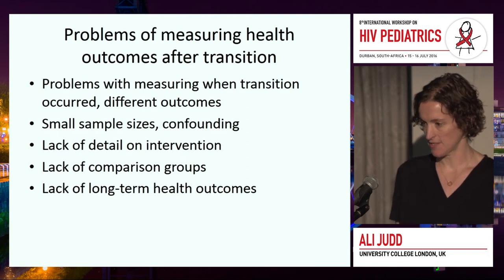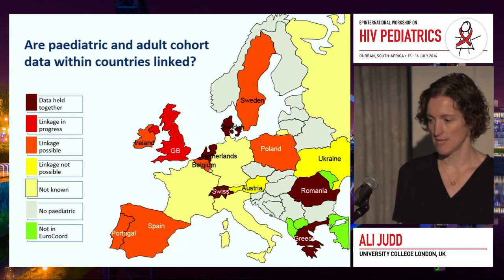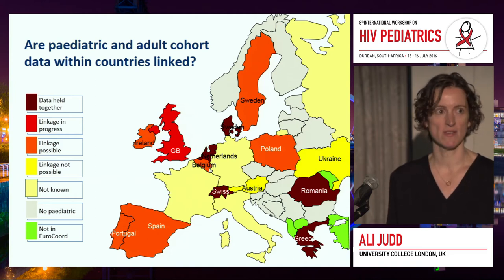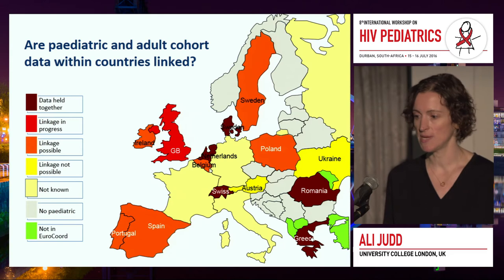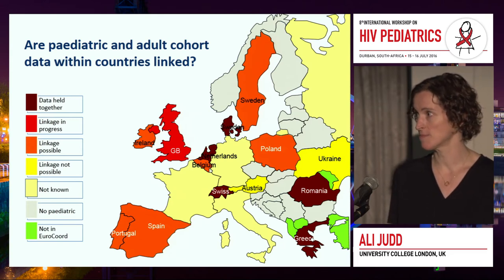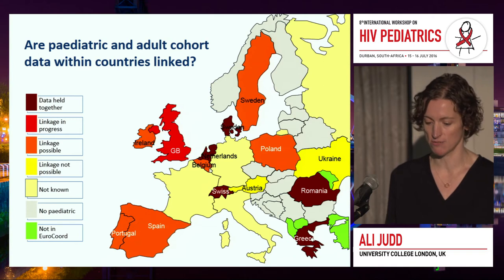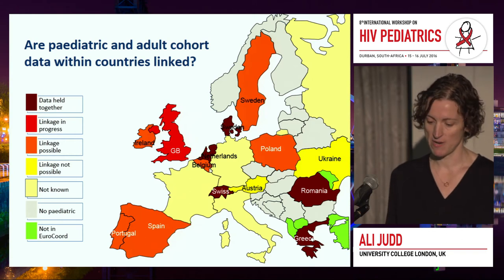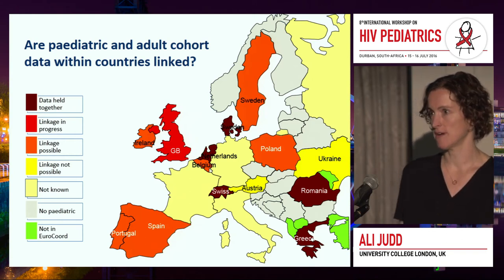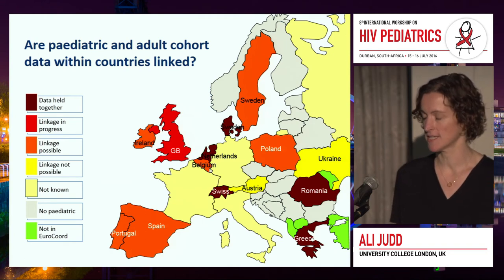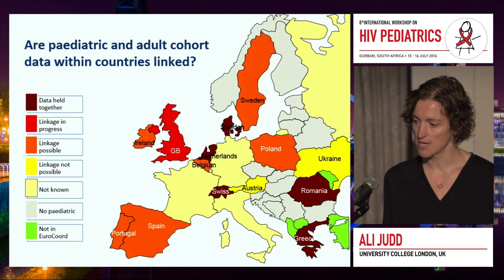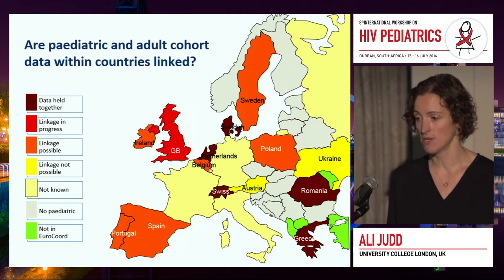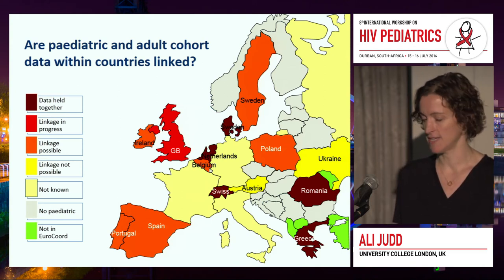To illustrate problems with measuring long-term outcomes, this is a map of children and young people across Europe where the colours indicate whether the cohorts are unified paediatric-adult cohorts or whether data linkage is possible between paediatric and adult cohorts. Although we have 12,000 children and young people across Europe with perinatal HIV, few are in countries where paediatric and adult datasets are held together — Sweden, the Netherlands, Switzerland, Romania, and Greece. Although data linkage is possible or in progress in some countries, it's a lengthy process with its own complications.